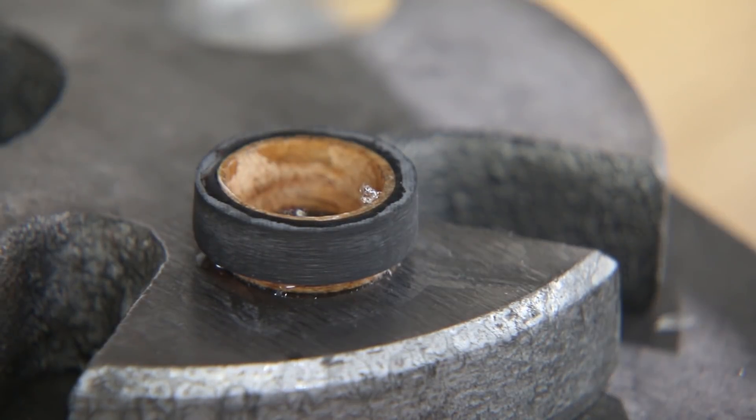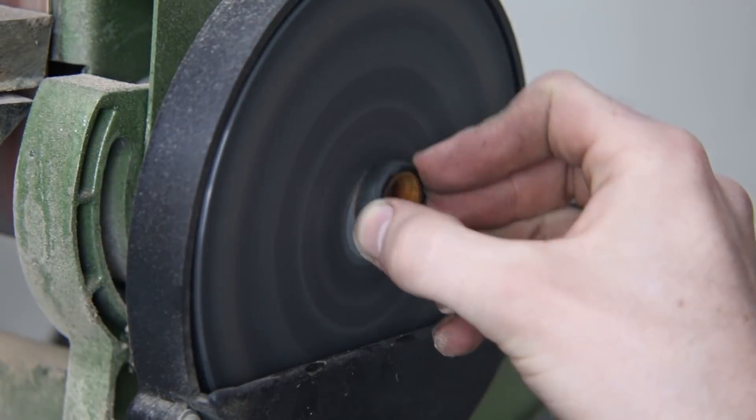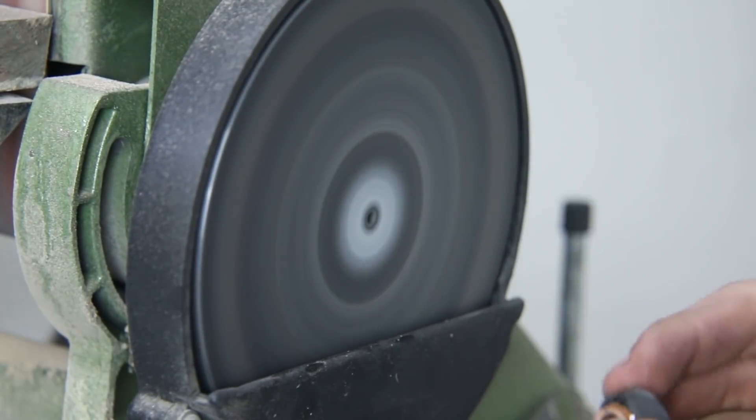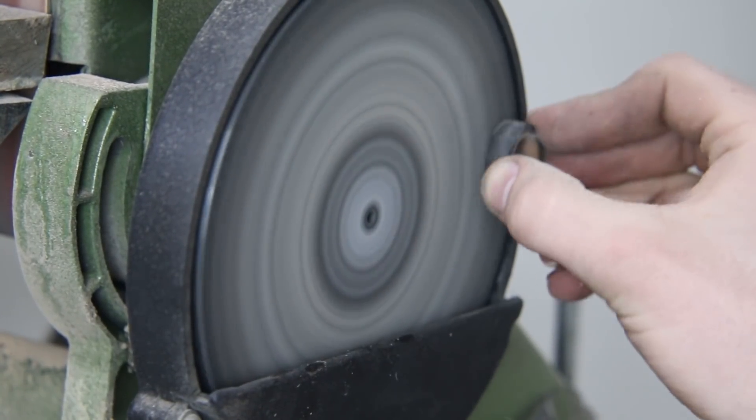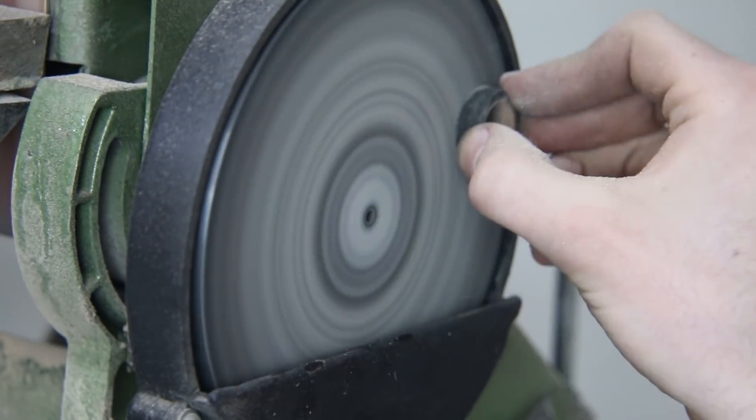And now this thing is permanently fused together. Next step we'll just be cleaning up the blank using this circular sander. All I'm doing is making all the surfaces flush, sanding down any of that excess cherry wood and some of the CA adhesive.